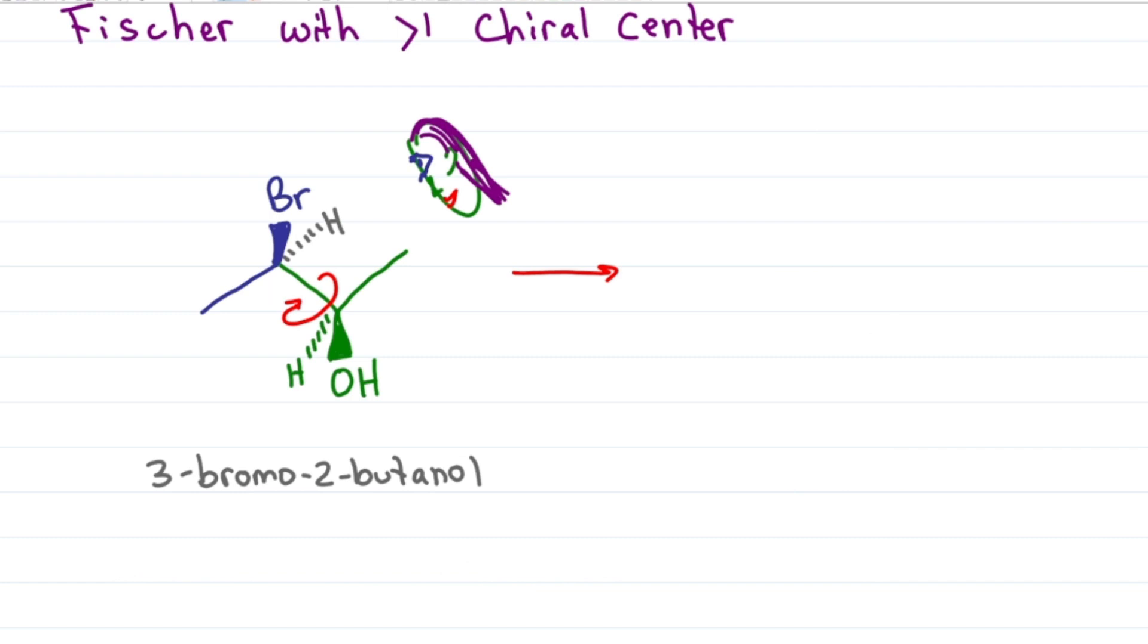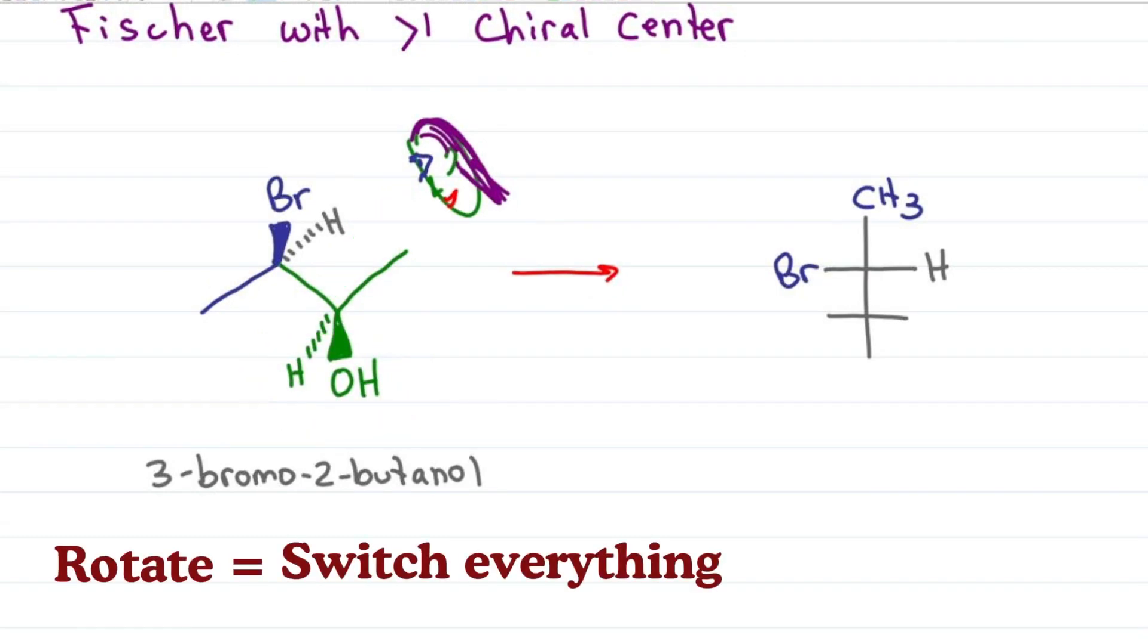We start by looking at the molecule exactly as before, where the blue chiral center is already oriented the way we want. That's a methyl lining up with my forehead, bromine with my left eye and hydrogen with my right. The lower chiral center is where it gets tricky. The groups still line up with my eye, but because they're going away from me, they're opposite of what I'm looking for. Understanding that to rotate means to switch everything, you can simply line it up as you see it, but draw it on the other side.